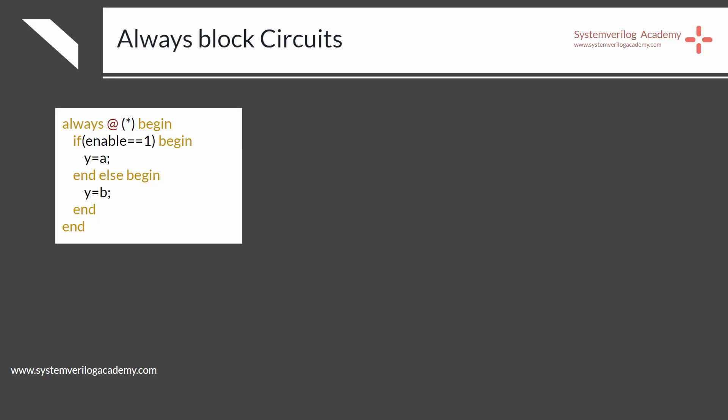Here is a general-purpose always block with an if statement — think about the circuit it generates. The code says: if enable is high, y equals a; otherwise y equals b. This will be a combinational circuit consisting of logic gates that propagates a to y when enable is high, or b to y when enable is low.